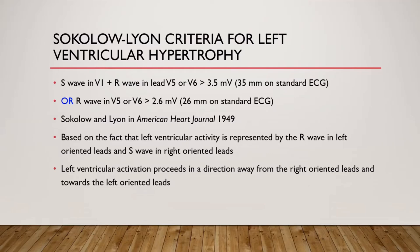Sokolov-Lyand published the criteria for left ventricular hypertrophy in the American Heart Journal in 1949. The S wave in V1 plus R wave in V5 or V6 together should constitute more than 35 mm on a standard ECG. Or the R wave in V5 or V6 should be more than 26 mm on a standard ECG.